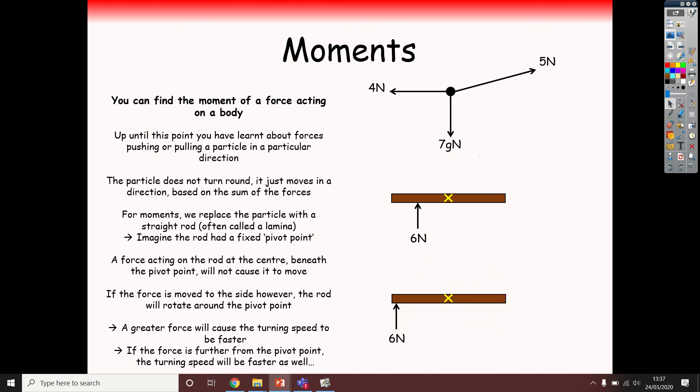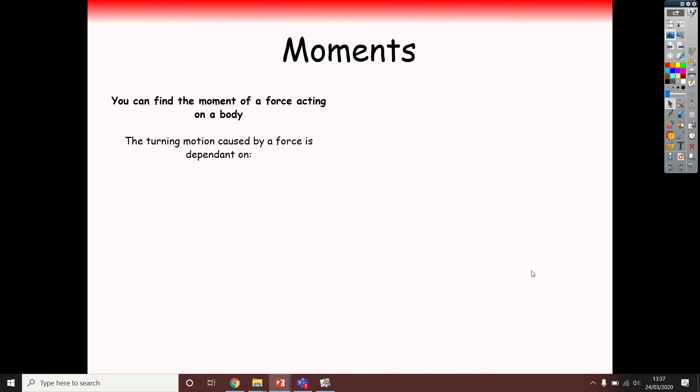A bit like when you're pushing a door open. If you push close to the hinge, it takes more force to get it open. If you push towards the edge of the door, then it's going to be a lot easier. So we need a way of measuring this. The effect that we get when we rotate is called a moment. And it depends on two things. It depends on how big your force is, the magnitude of the force, and also the distance that you apply your force from the pivot point.